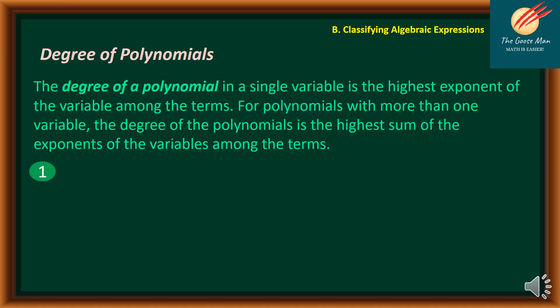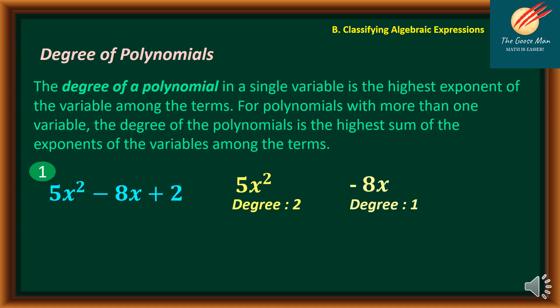The degree of a polynomial in a single variable is the highest exponent of the variable among the terms. For example, in 5x squared minus 8x plus 2: the term 5x squared has degree 2, negative 8x has degree 1 (when no exponent is shown for x, it means the exponent is 1), and the constant term 2 has degree 0 — because a number alone has a degree of 0.